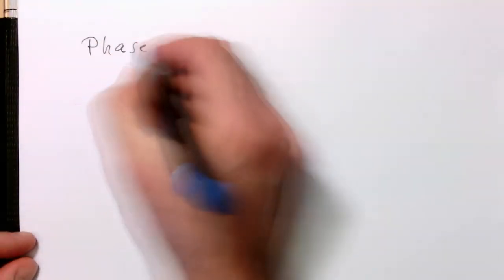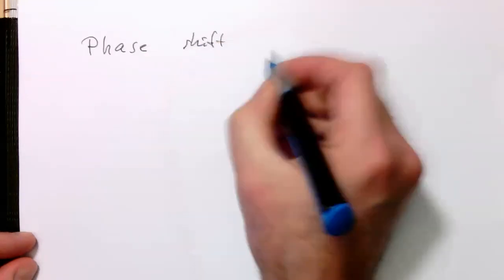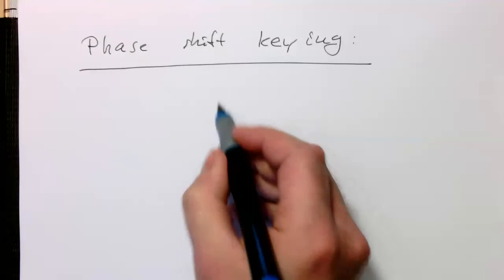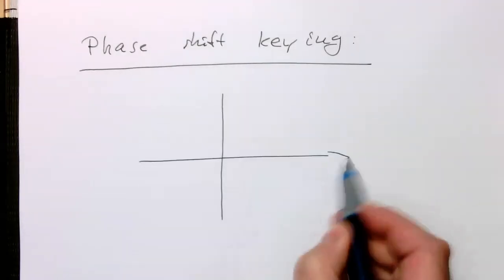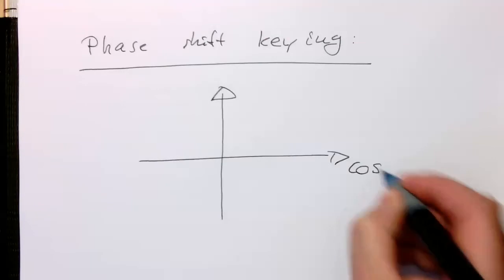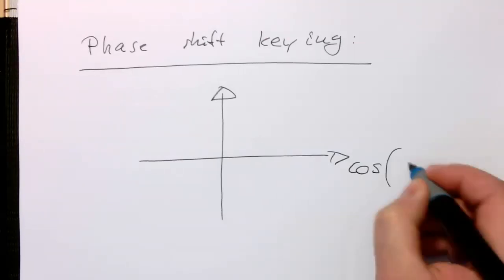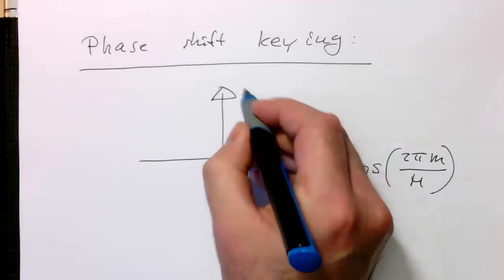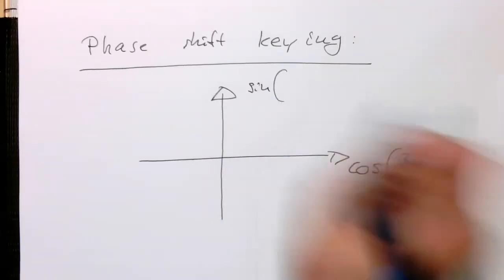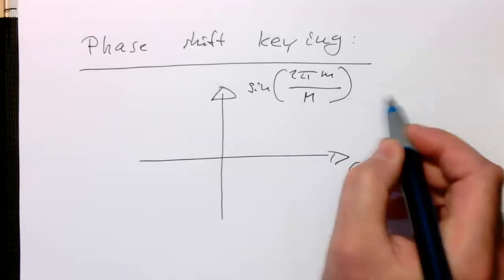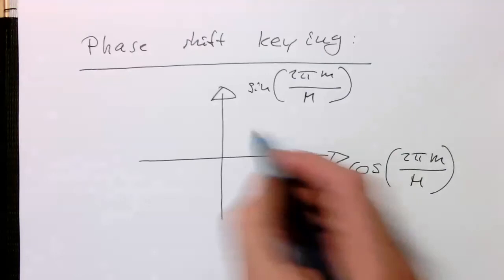We could define phase shift keying in this way: cosine of 2π m divided by capital M, and sine of 2π m divided by capital M.